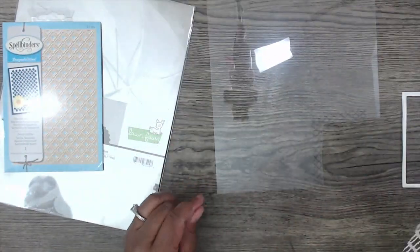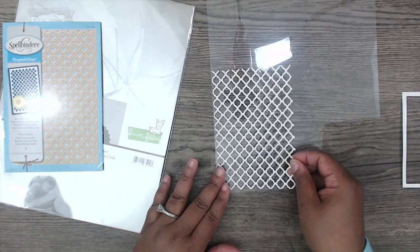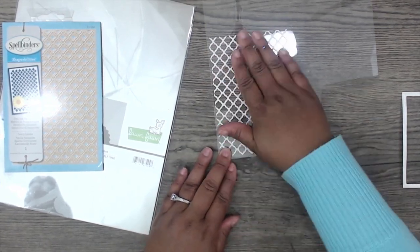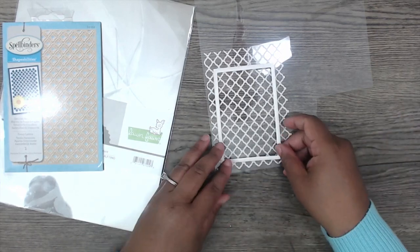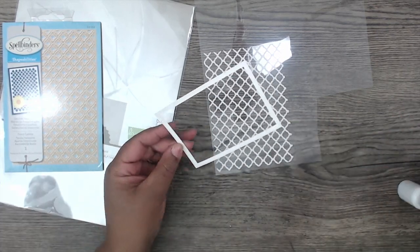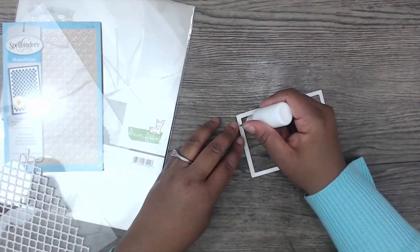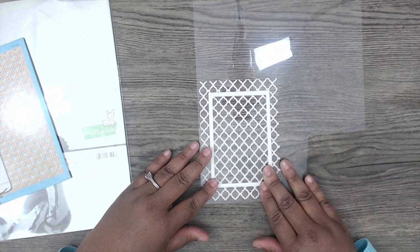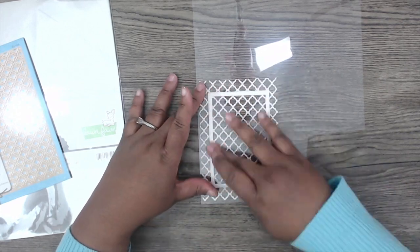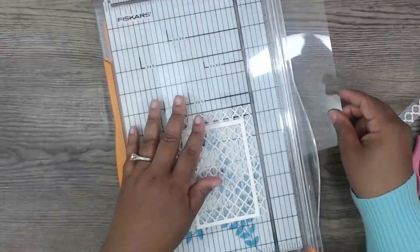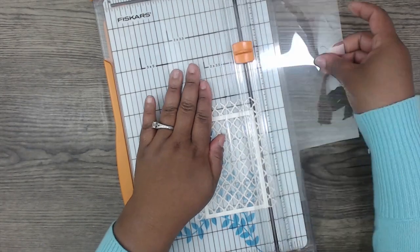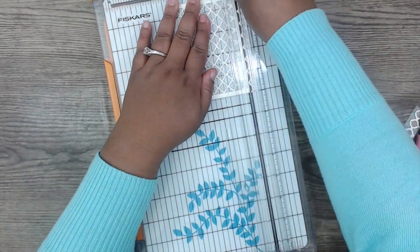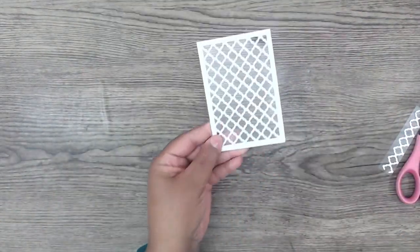Now take the lattice die, add some spray adhesive to the back and add it directly on top of the acetate. That will create a beautiful peekaboo window using that lattice die. Add some wet glue to the back of the last remaining frame that you cut out earlier and add that on top center of the lattice and acetate combination. Then take your scissors or your paper trimmer and cut off the excess around the rectangular to create a nice and neat card front.